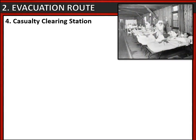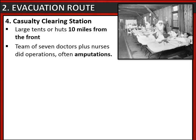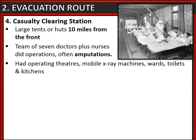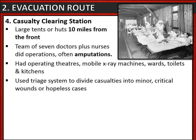Let's look at the casualty clearing station in a little bit more detail. These were often in large tents or huts, quite far back from the front line around 10 miles away. They would have been run by teams of doctors and nurses, and this is where operations would happen, especially emergency operations like amputations. They had operating theatres and mobile x-ray machines as well as other resources. They used a triage system to divide the casualties into categories such as minor wounds, critical wounds or hopeless cases, and depending on which category you ended up in, that would determine how quickly you would be treated and the type of treatment you would receive.